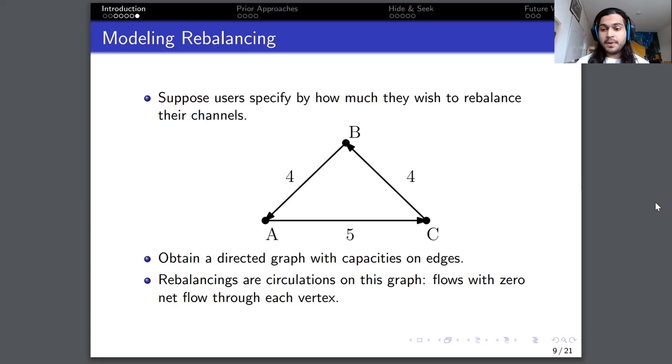You can also see that the right rebalancing in this case would be a flow of four units along A, C, B, and back to A. And that would mean neither party actually gains money or loses money, which is again the critical property of rebalancing. So in fact, once we have modeled the problem as a directed graph with the capacities on edges, the problem of rebalancing is simply finding the appropriate circulation on this graph. A circulation is a special kind of network flow. So of course, this flow should respect the capacities of the edges. But moreover, the flow would be considered a circulation if the net flow through each vertex, so the amount of outgoing flow minus the amount of incoming flow is zero. So those are called circulations and rebalancing are precisely circulations on the graph that we have constructed.